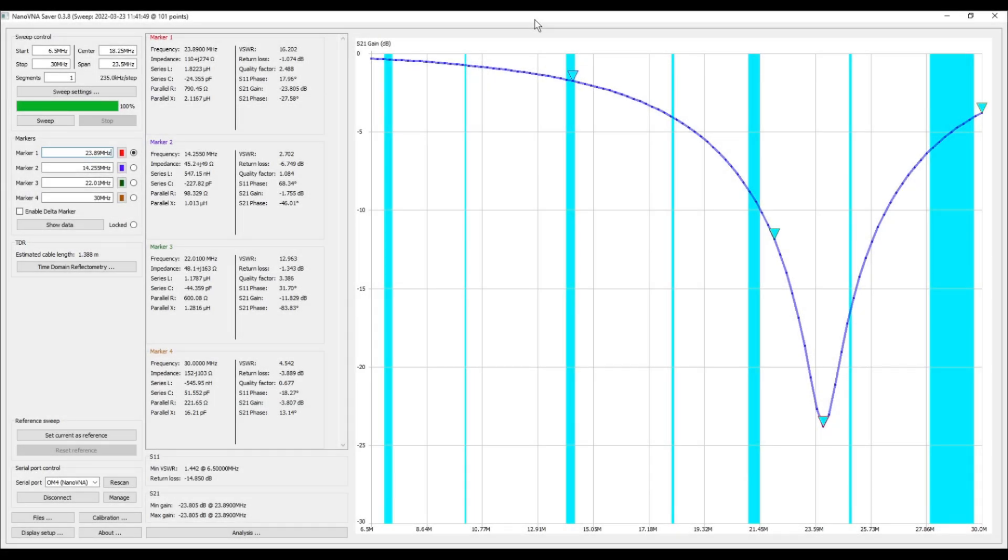Okay, so here we are in nano VNA saver, and we just have a calibration set up here to go from 6.5 megahertz to 30 megahertz. I have a marker down here in this dip at the low point, hopefully you can see that. That is saying we're at 23.89 megahertz, which I believe was pretty close to where we were when we were on the device itself.